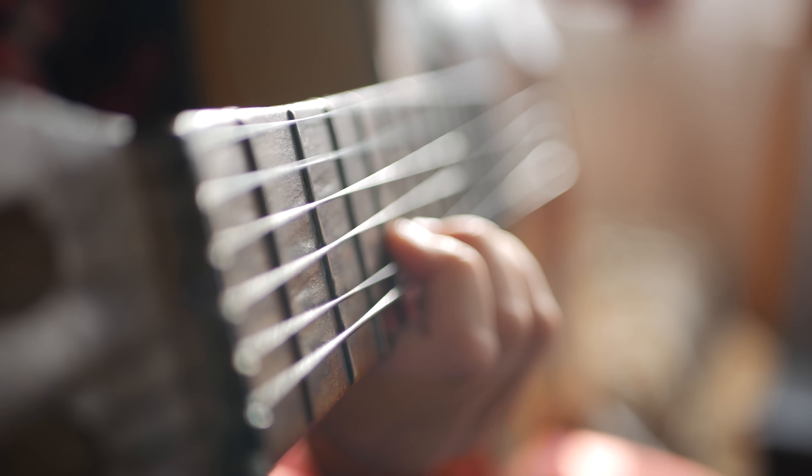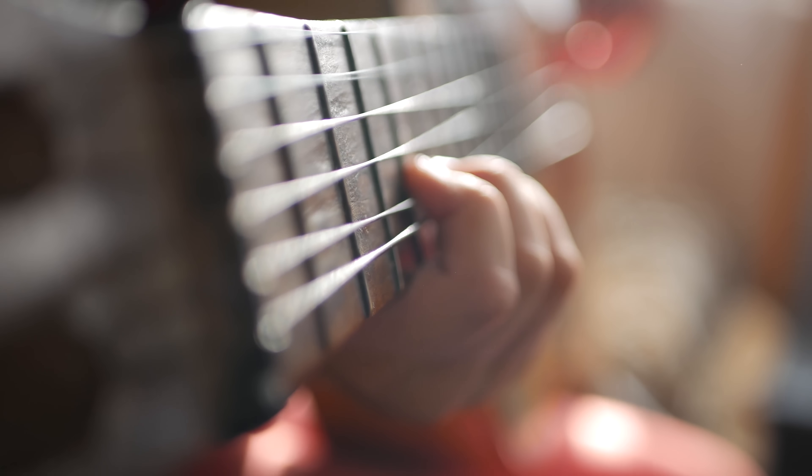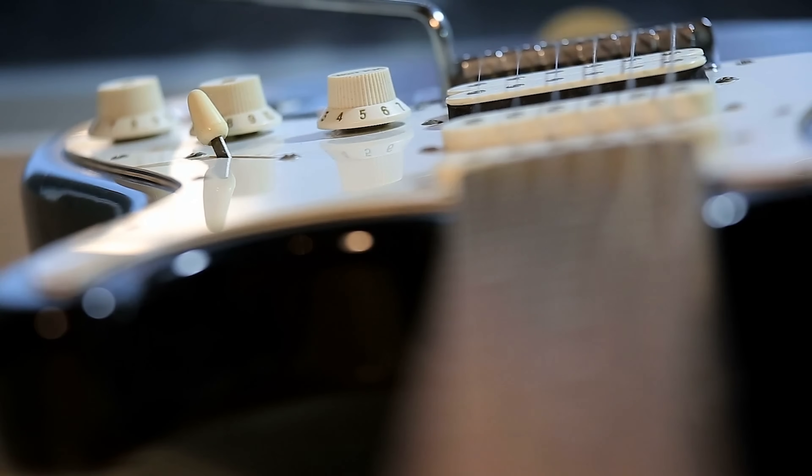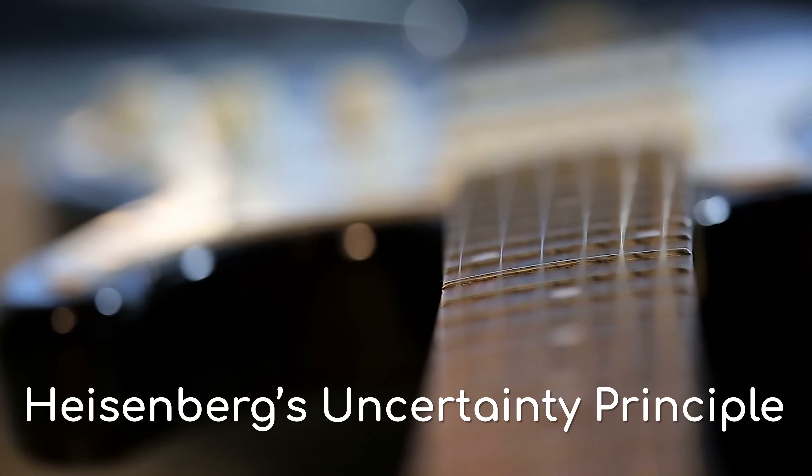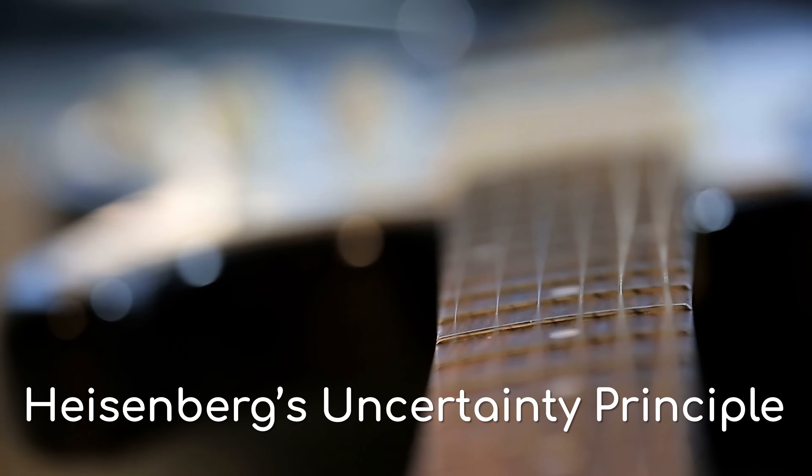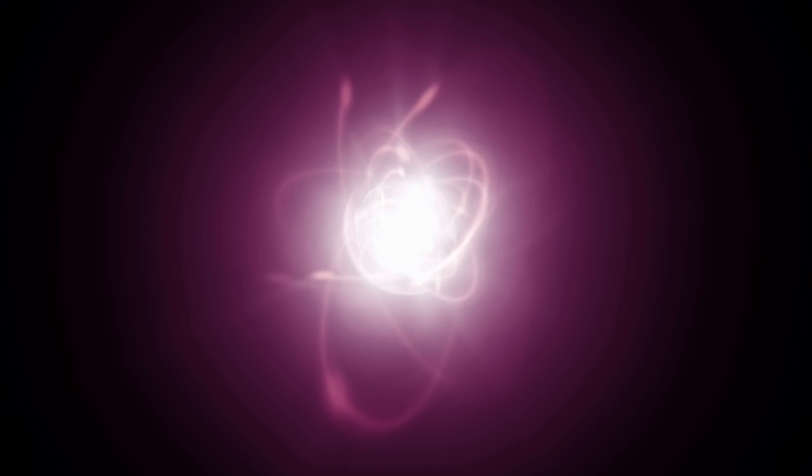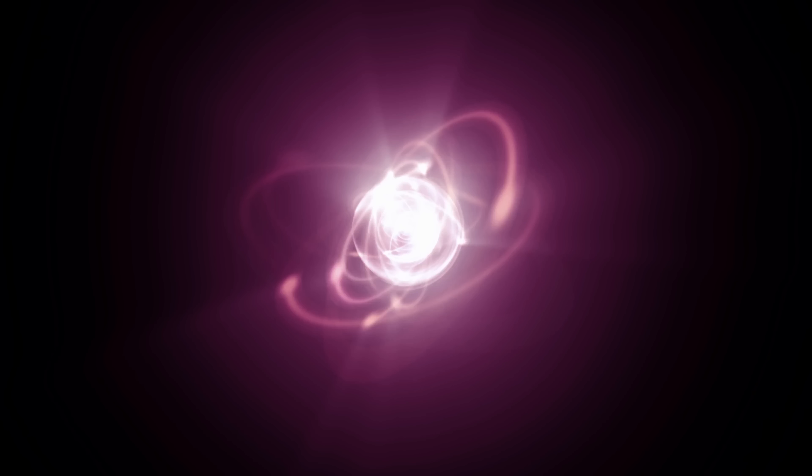But why does this matter? Why is it important to define the universe in this way? Well, due to an idea of quantum physics called Heisenberg's Uncertainty Principle, sometimes the strings of the universe start strumming themselves. Without going too deeply into this aspect of quantum physics, essentially, when we are looking at really tiny objects on the atomic scale, it becomes impossible to know too much about them. You cannot know both the location and the direction of travel of an electron, for instance.